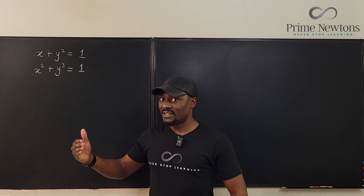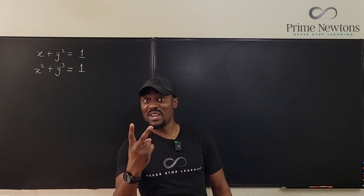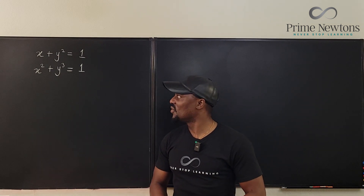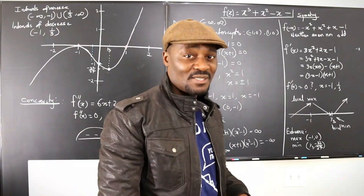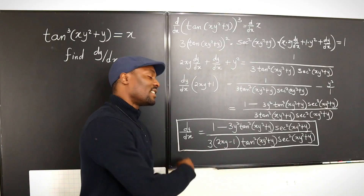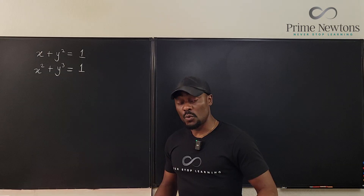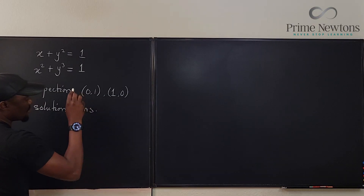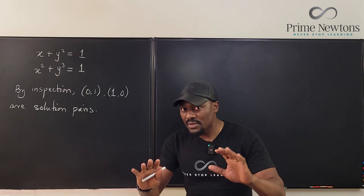Remember that this problem is from a team selection test for a mathematics olympiad, so definitely they don't expect you to just guess and walk away. But by guessing we've already found two sets of solutions. If you want to select an olympiad team, you want more than guessing — there's more work to do. Let's get into it, and write out the solutions we've found by inspection.